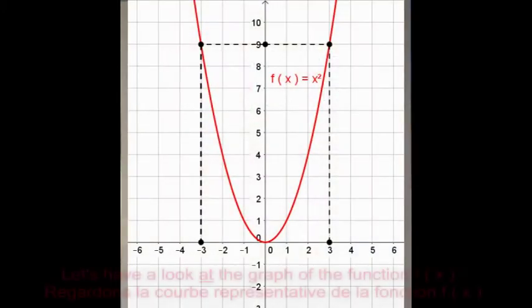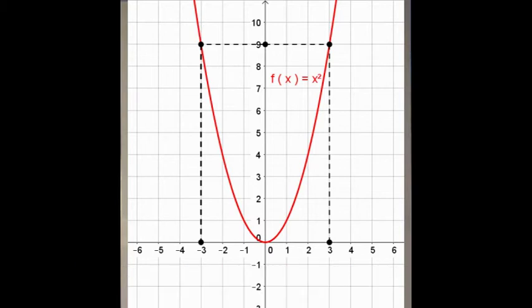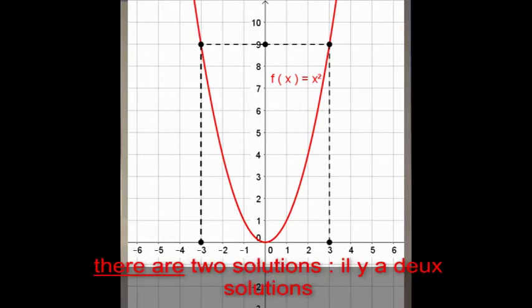Let's have a look at the graph of the function f of x equals x squared. We plot 9 on the y-axis and as you can see, there are two solutions.